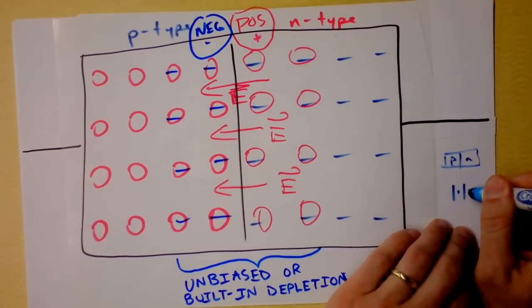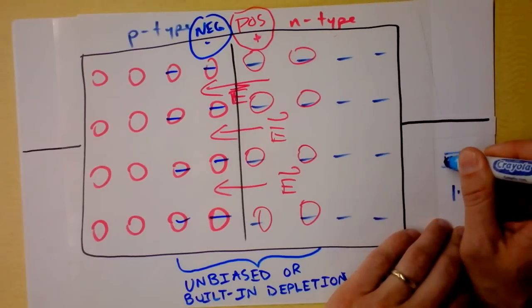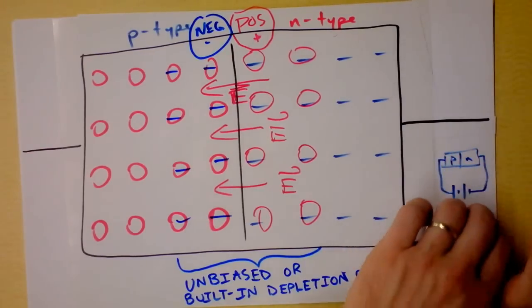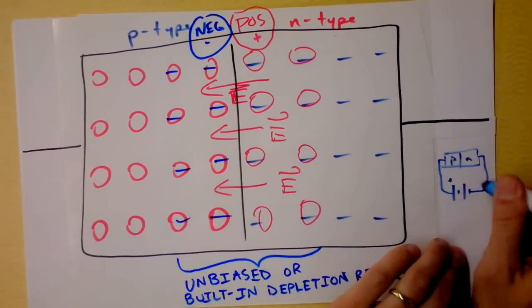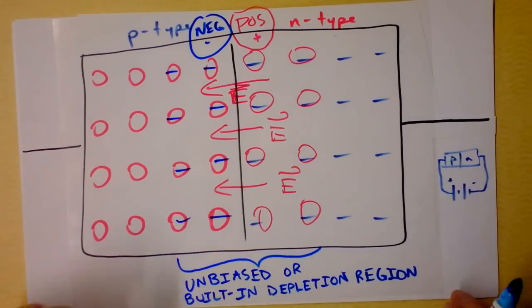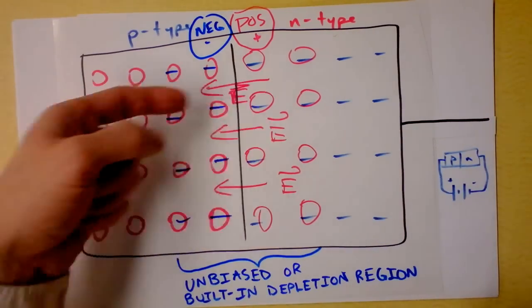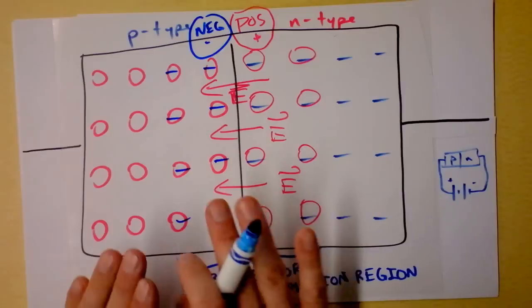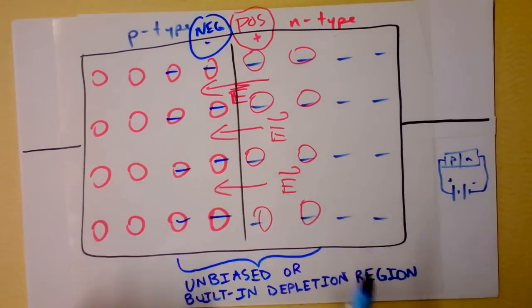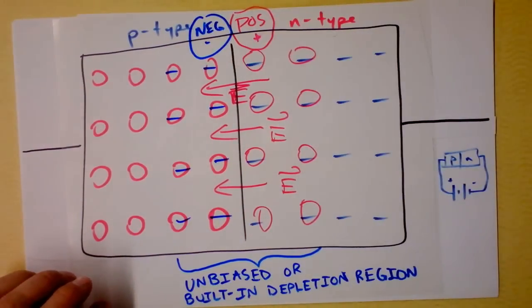And my voltage source, maybe it's a battery, is going to be hooked up like that to the p-n junction. So I'm going to have some positives over here and some negatives over here. That's going to make an electric field inside of this system that's pointing to the right. It's actually opposing the built-in electric field of the migrating charge carriers.